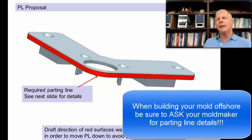However, when you're dealing with an offshore manufacturer, unless you specifically ask them to identify where they're going to put those parting lines, they're going to assume they can put them wherever they want and they're likely to put them in a place that makes the mold easiest to build and lowers their cost.